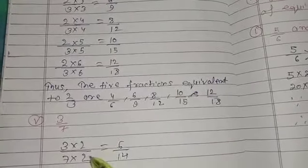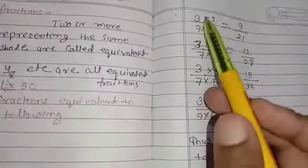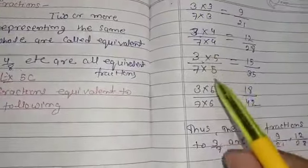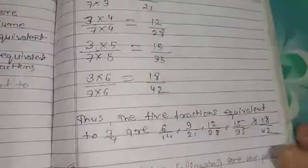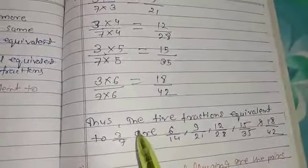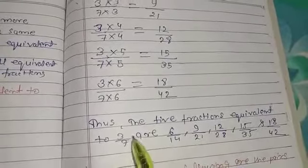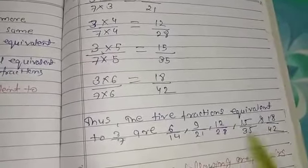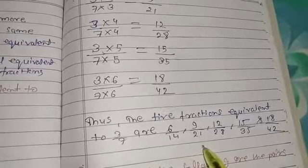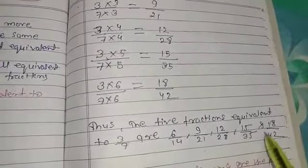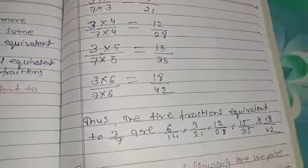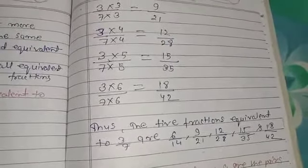Multiply by 2, 3, 4, 5, and 6. The five equivalent fractions to 3 upon 7 are 6 upon 14, 9 upon 21, 12 upon 28, 15 upon 45, and 18 upon 54.